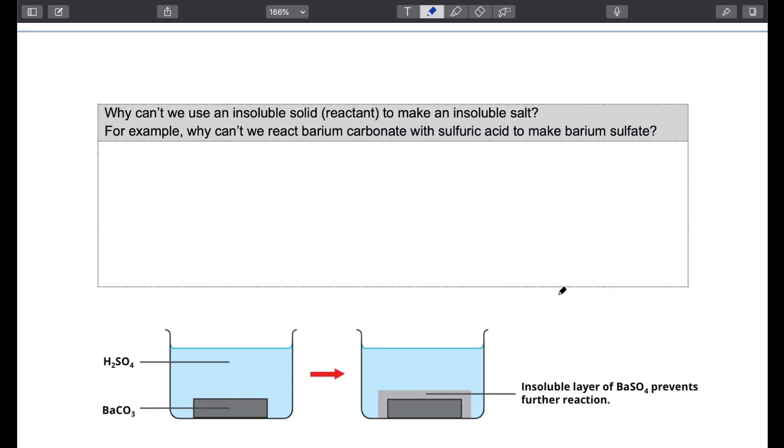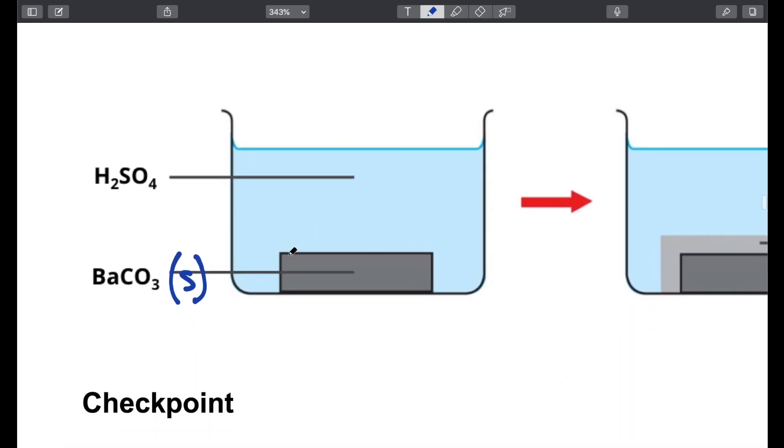Now is it possible we prepare barium sulfate using the reaction of an acid and a carbonate. For example, would it be possible to make barium sulfate by reacting barium carbonate with sulfuric acid? Now there's a problem over here because barium carbonate itself is insoluble in water. The product barium sulfate is also insoluble. So what's going to happen, if I can zoom in, is that initially there will be reaction between the barium carbonate and sulfuric acid around the surface of the barium carbonate solid.